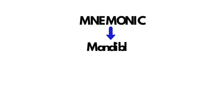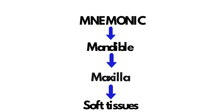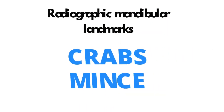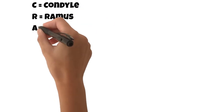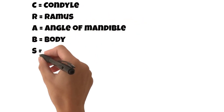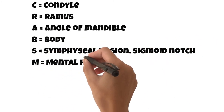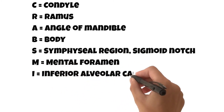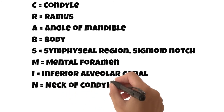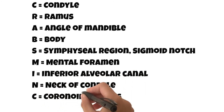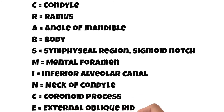So what mnemonic can we use to help remember the hard and soft tissue structures when looking at an OPG x-ray? For the anatomical features of the mandible visible on a DPT or OPG, remember the acronym CRABS Mints: C equals condyle, R equals ramus, A equals angle of mandible, B equals body, S equals symphysial region, sigmoid notch, M equals mental foramen, I equals inferior alveolar canal, N equals neck of condyle, C equals coronoid process, and E equals external oblique ridge.